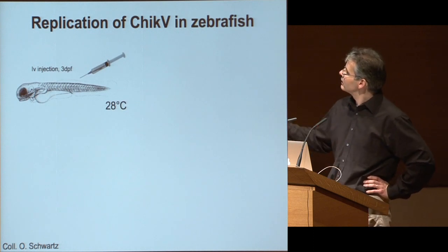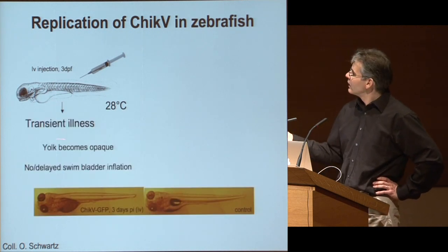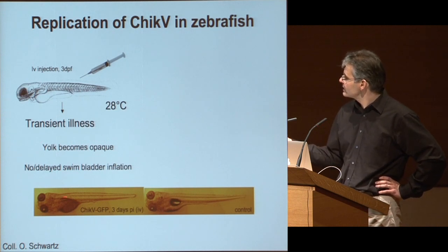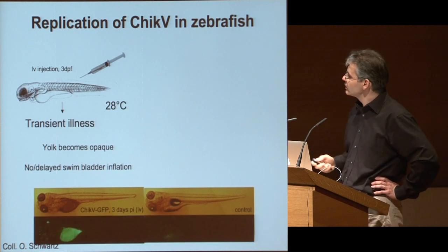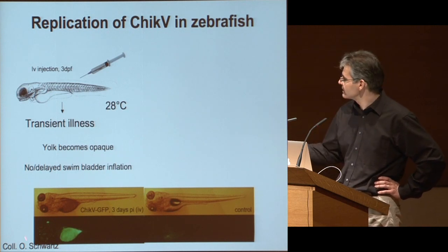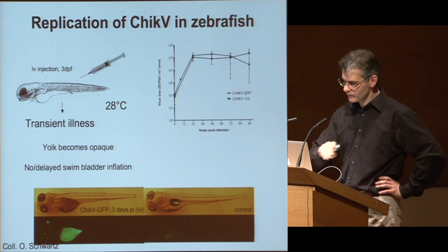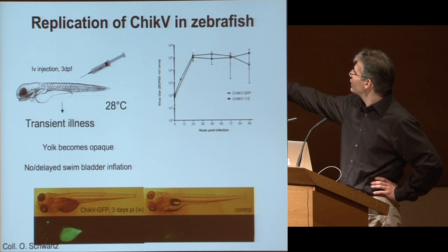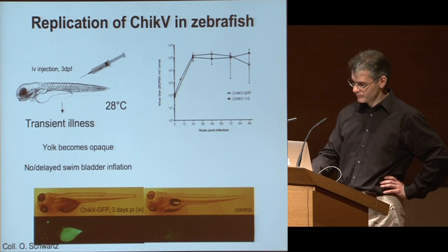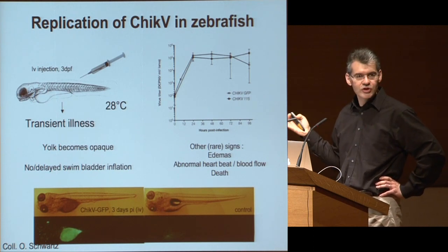We injected chikungunya virus into zebrafish larvae, and what we observed was a transient illness. There are clear signs: in infected fish, the yolk looks opaque and the swim bladder fails to inflate properly. Using the GFP virus, this correlates with strong infection in the yolk stasis cell, and there are also many infected cells in the head. When we measured viral titers, we saw very strong replication until 24 hours, after which it plateaued and even tended to decrease. Only about 10% of fish showed serious signs; all other fish would recover and be fine.